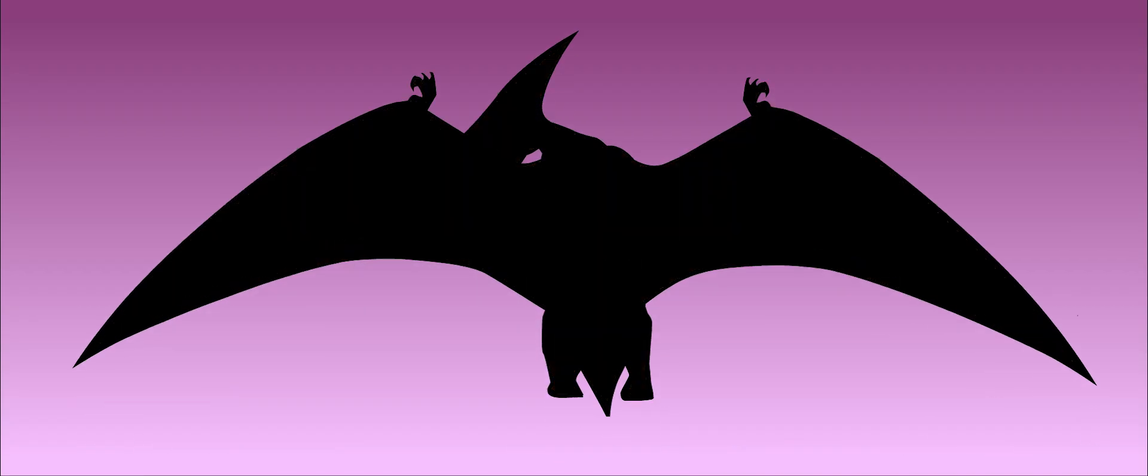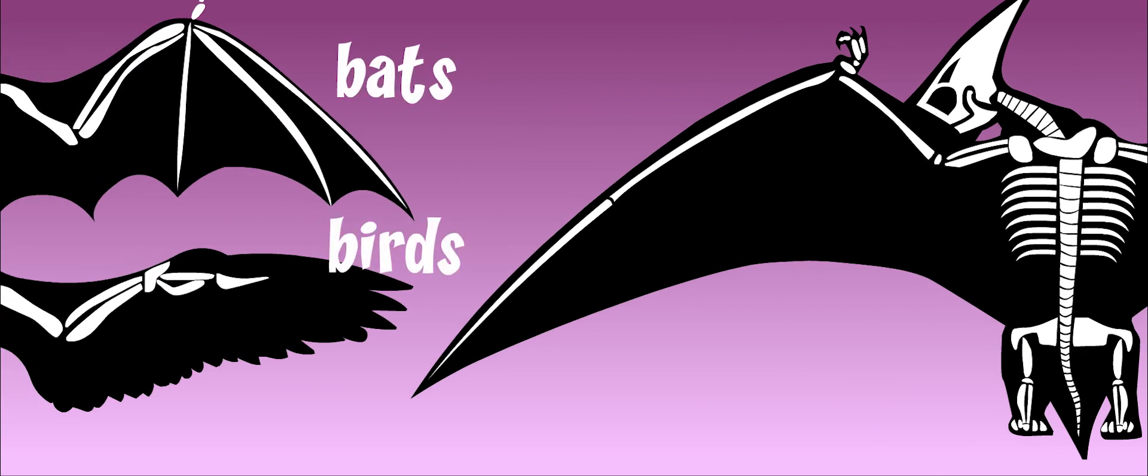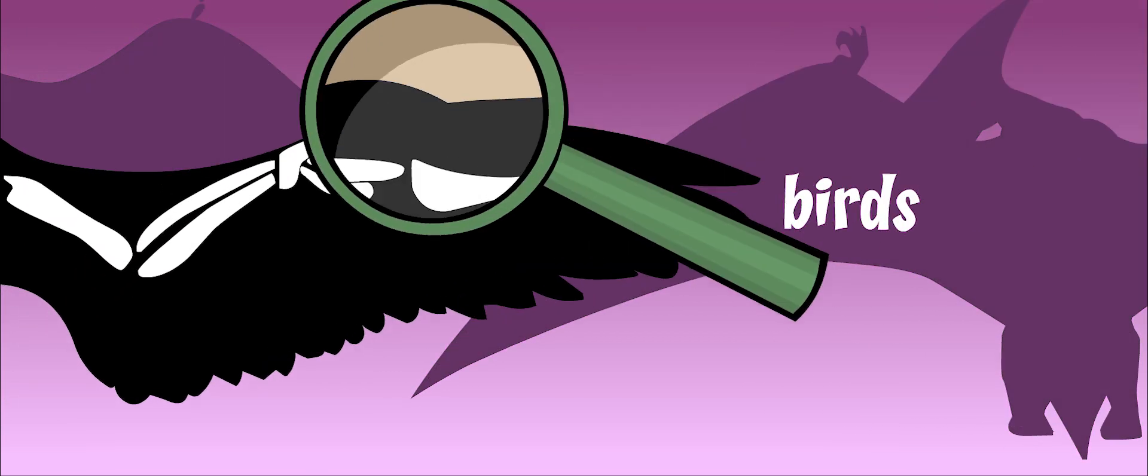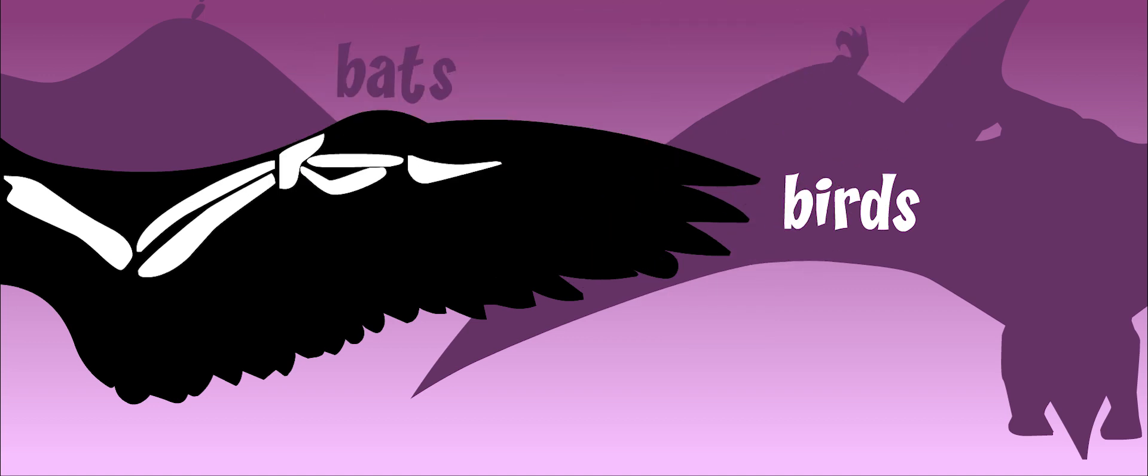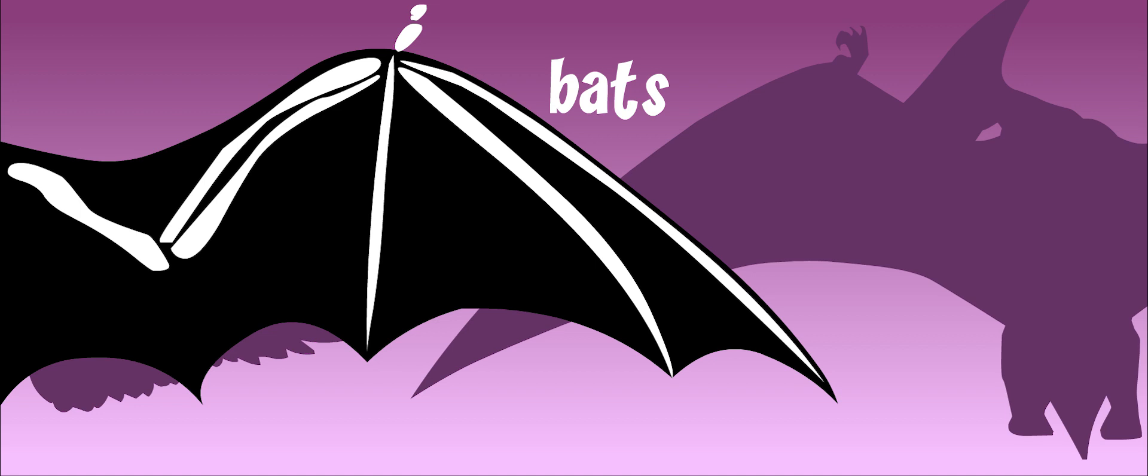The bones in a pteranodon's wing look very different from those of bats and birds we know today. Birds lost their hands completely when they grew wings over millions of years. A bat's entire hand became its wing, stretching out its fingers into long ribs.